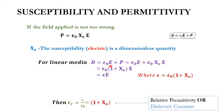For a linear medium, the displacement vector D equals ε₀E plus P, where P is ε₀χₑE. So D equals ε₀(1 + χₑ)E, which gives us D = εE.